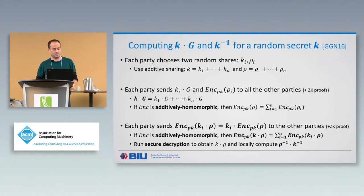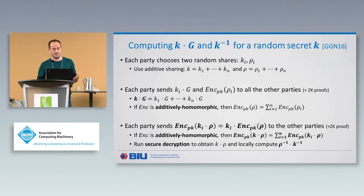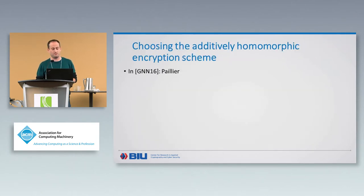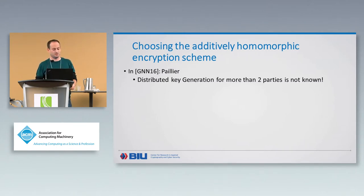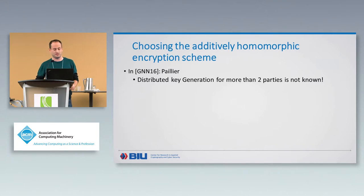A crucial part of this process is that the encryption scheme must be additively homomorphic. The simple solution is Pallier, which is the encryption scheme used in that work. But the problem is that to use Pallier we need distributed key generation for the Pallier key, which we don't know how to do for more than two parties — and even for two parties it's expensive.